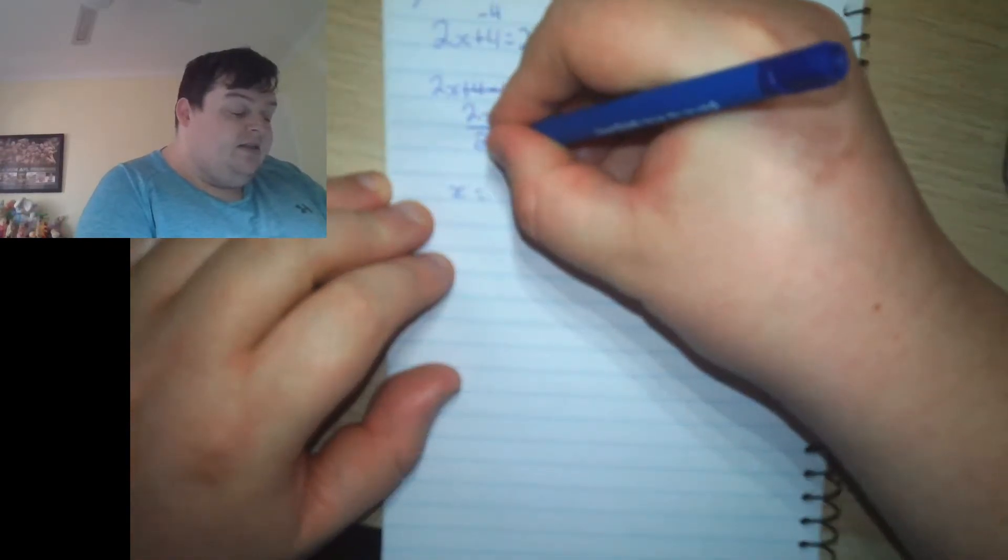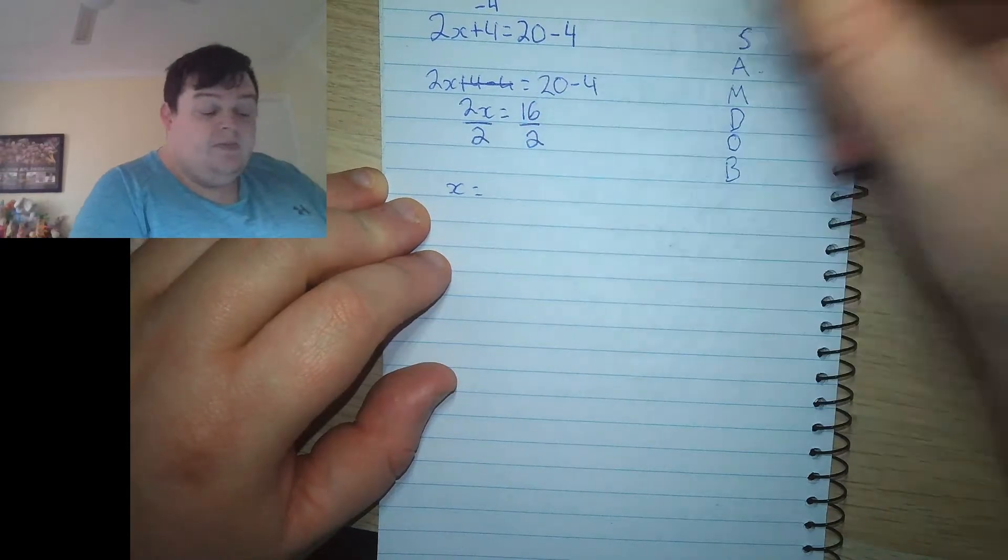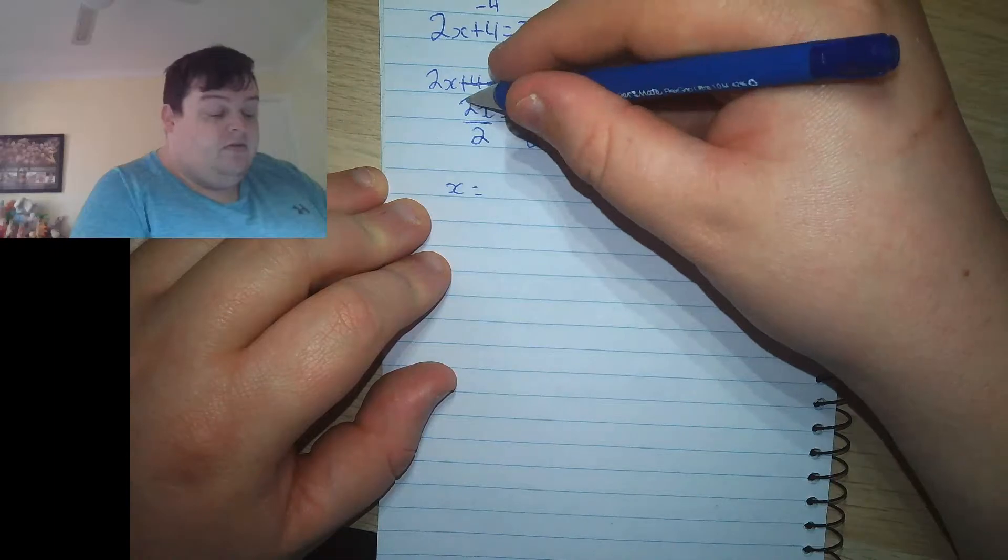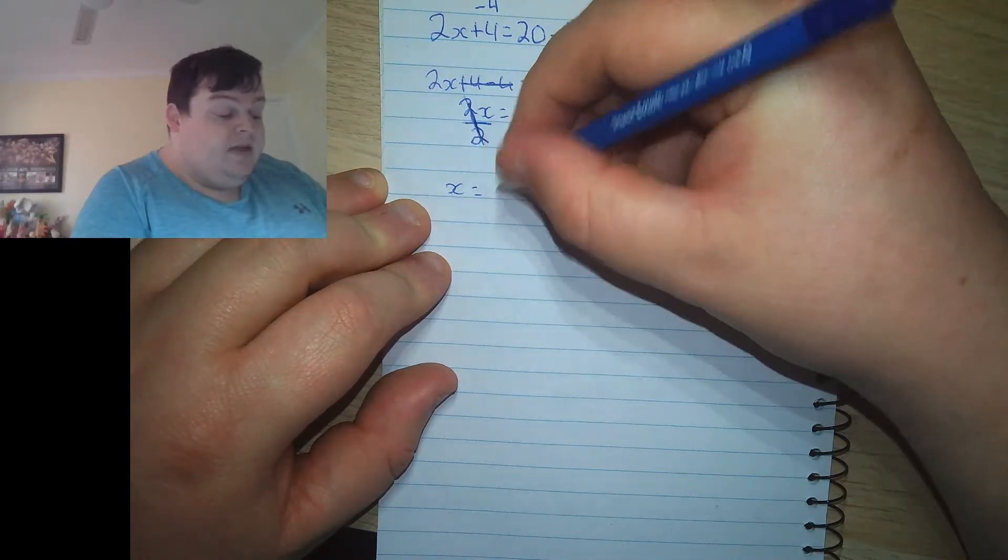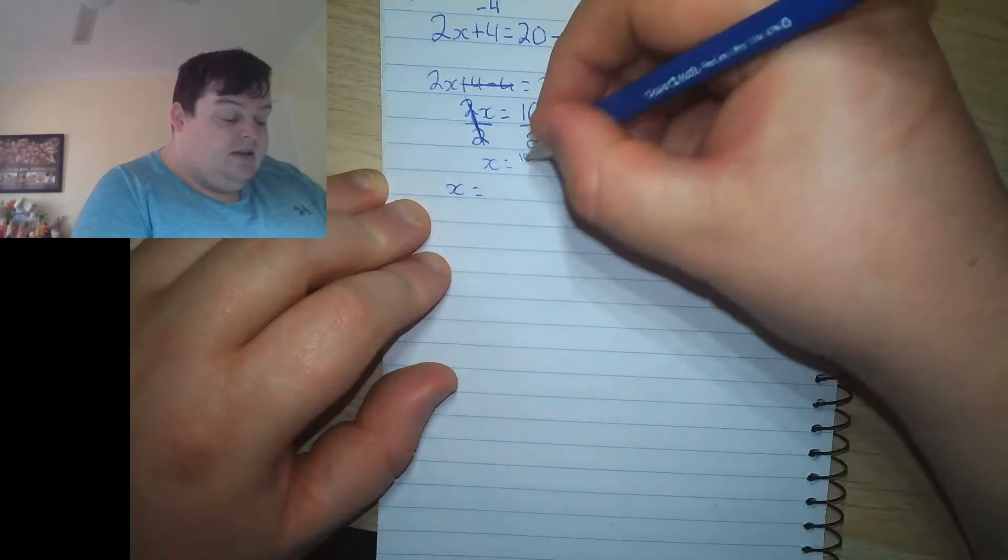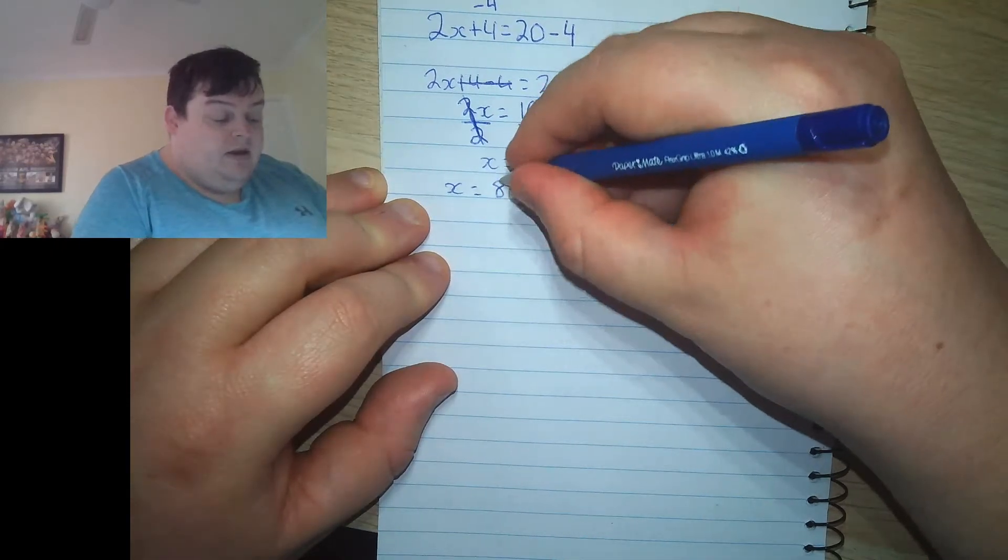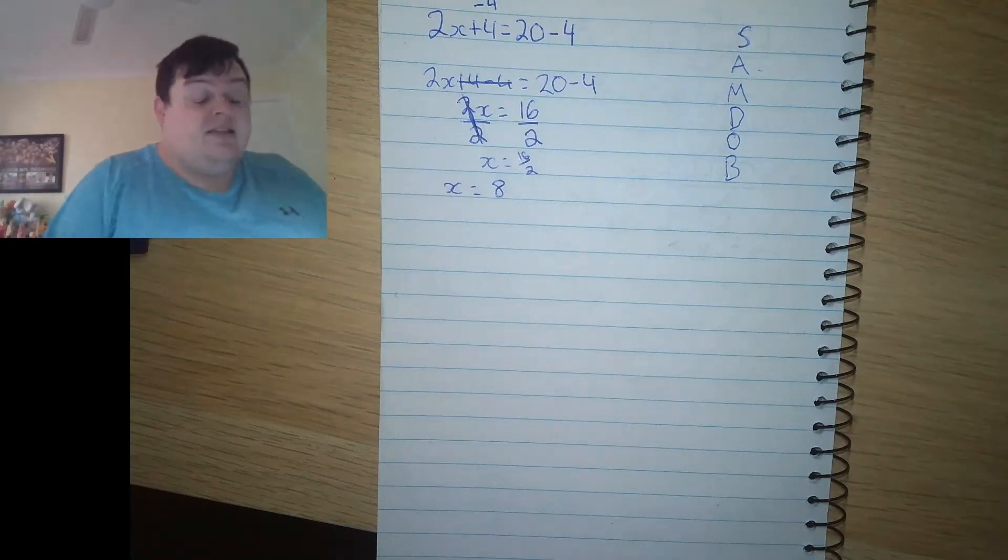But again, if I'm dividing this side of an equation, I also need to divide this side of an equation. So 2x divided by 2, the two 2s cancel each other out. And we get left with x equals 16 divided by 2. 16 divided by 2 gives us 8. And that's how you get that to work.